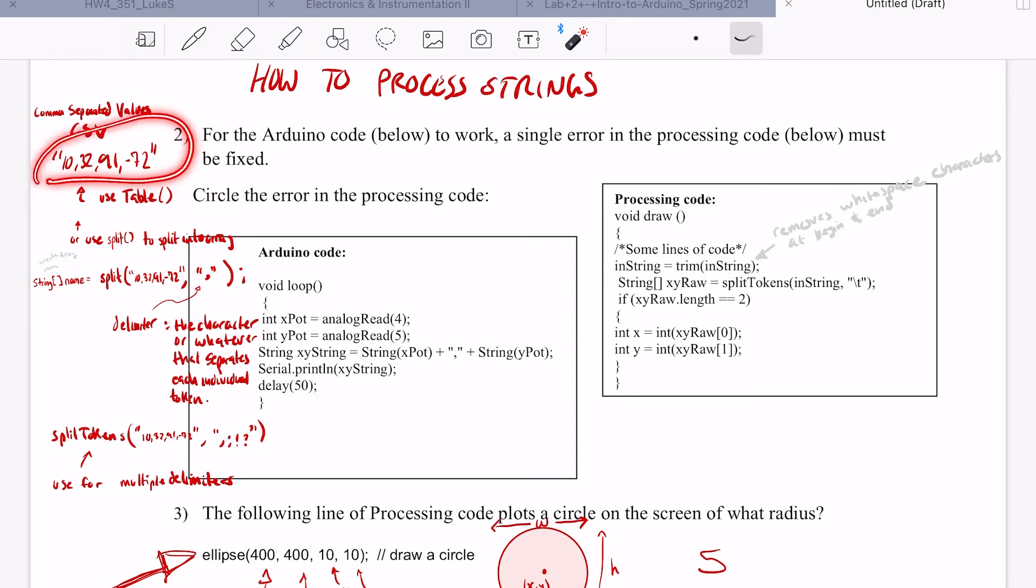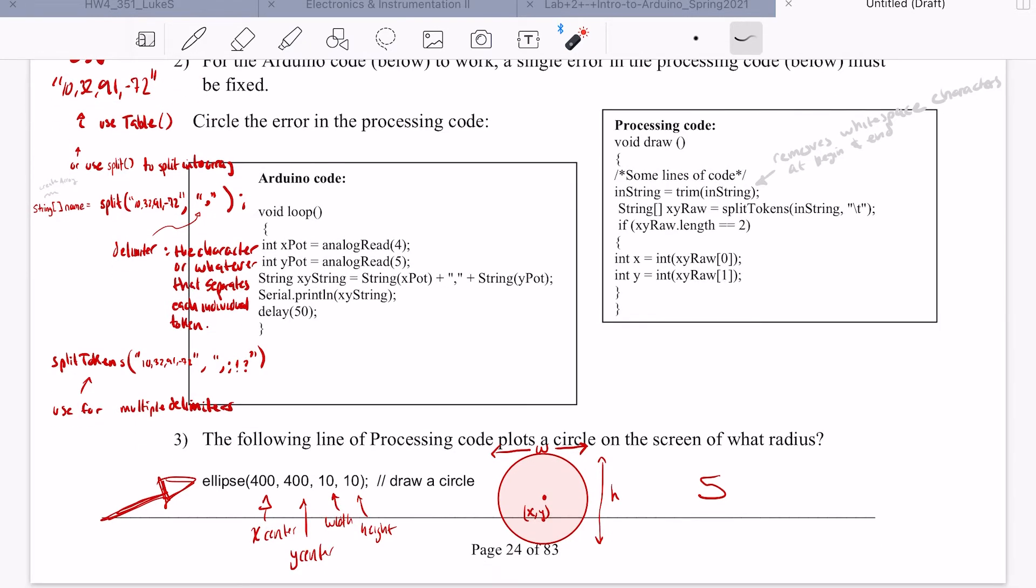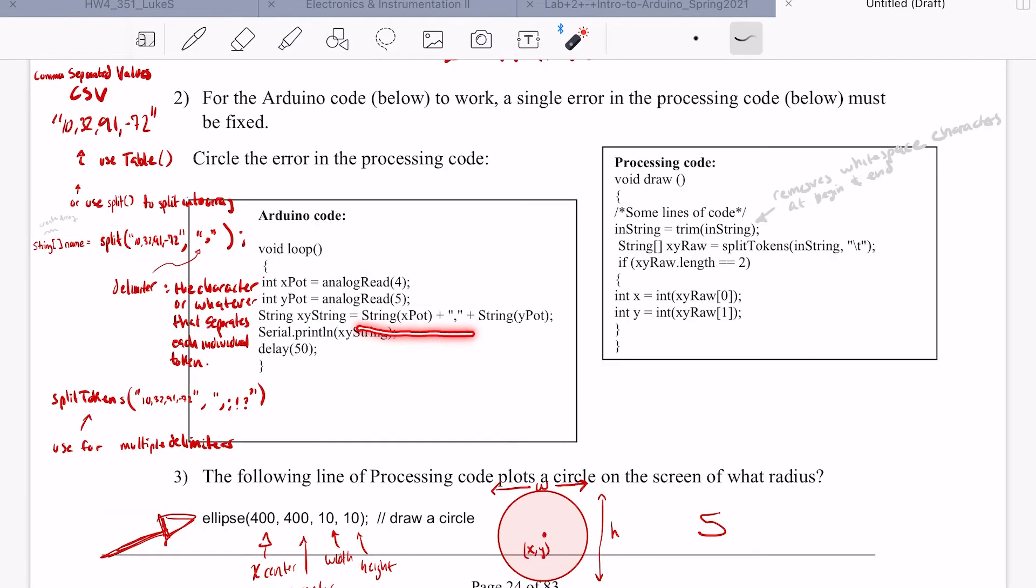So for this kind of string, we would want to specify the comma as the delimiter. If we wanted multiple delimiters to specify the difference between the string values, then we could use split tokens and you can specify multiple delimiters. Problem here is that the string that we're feeding in is separating the values by a comma.